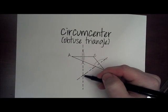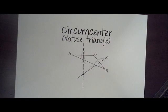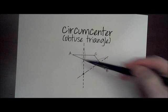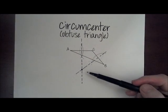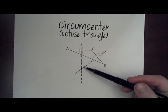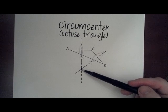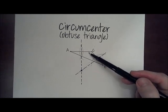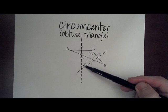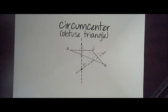Where these intersect will be our circumcenter, which is the center of a circle. If I drew it, we'd go all the way around and touch each vertex once. Notice that the location of the circumcenter in an obtuse triangle is outside the triangle, opposite the obtuse angle — here's the obtuse angle, and opposite that, it's pointing at the circumcenter.